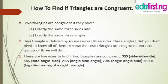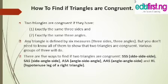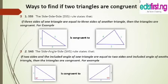So two triangles will be congruent if they have one, exactly the same three sides, and two, exactly the same three angles. So if the sides in triangle A equal the sides in triangle B, and the angles in triangle A equal the angles in triangle B, then the two triangles are congruent. There are five ways to find if two triangles are congruent: SSS (side-side-side), SAS (side-angle-side), ASA (angle-side-angle), AAS (angle-angle-side), and HL (hypotenuse-leg of a right triangle).